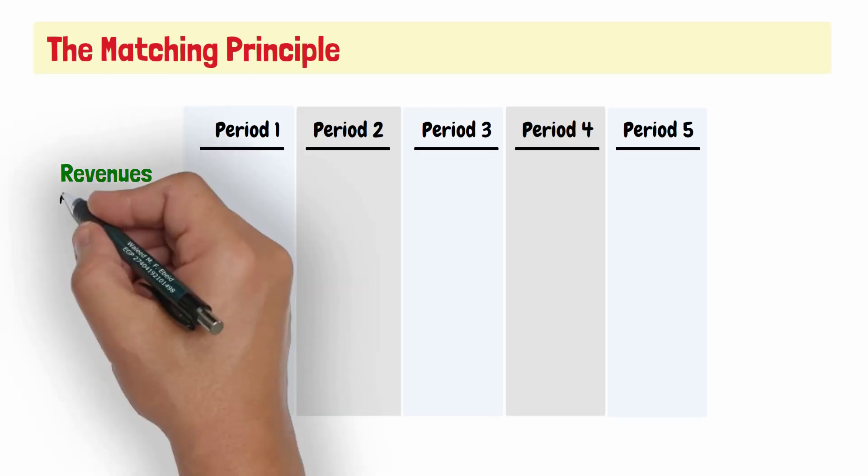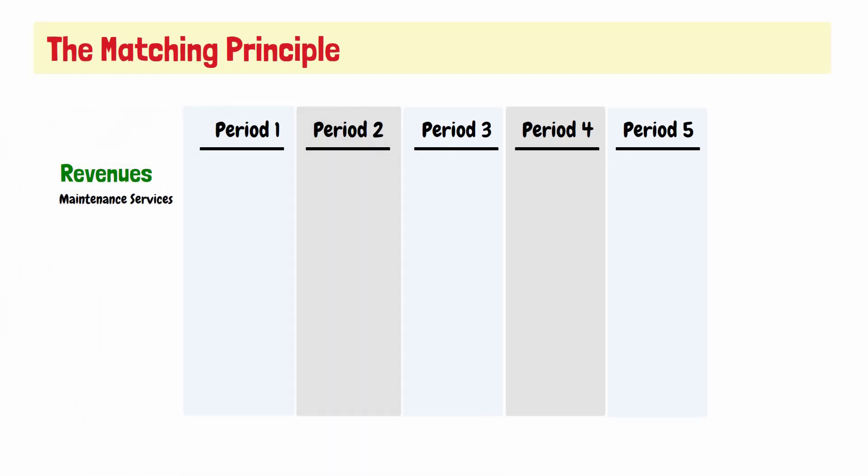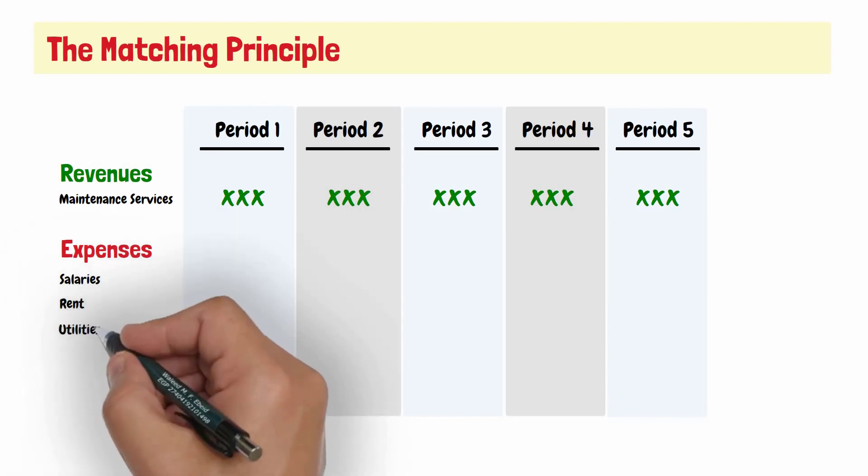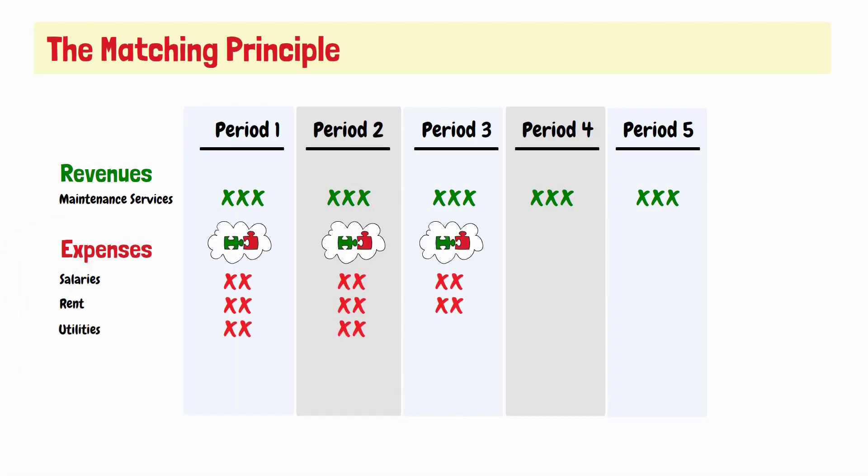Another example is when a company provides services to a customer on a monthly basis. The expenses incurred to provide those services, like employee salaries, rent, and utilities, should be recognized in the same accounting period these revenues were recorded.